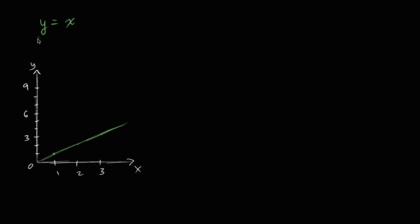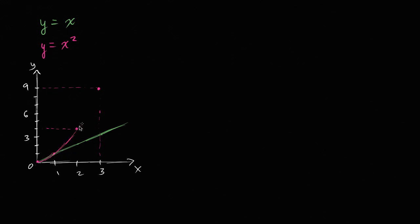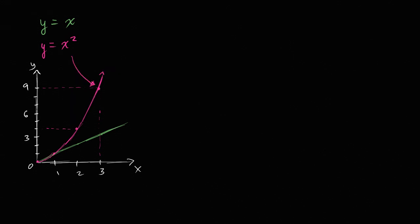Now let's also plot a quadratic — let's plot y is equal to x squared. That's actually why I went up to nine on the y-axis. When x is zero, y is zero. When x is one, y is one. When x is two, y is four. When x is three, y is nine — right over here. So the graph of y equals x squared on these axes looks like a parabola. We're used to recognizing this as a quadratic, and a line as a linear function.